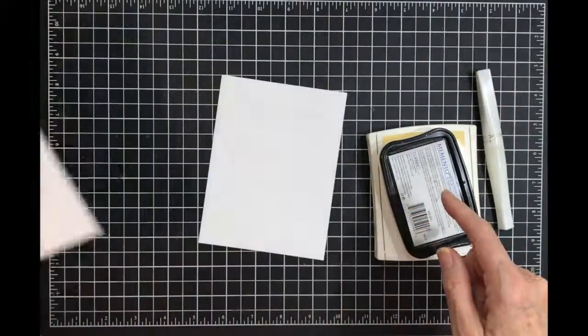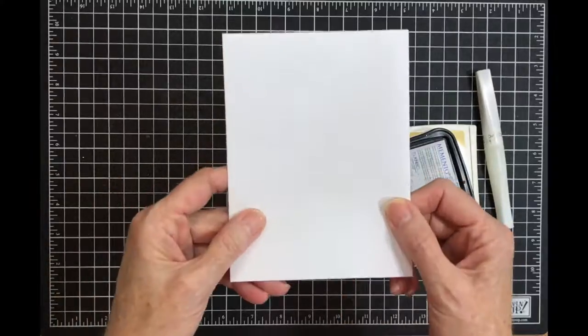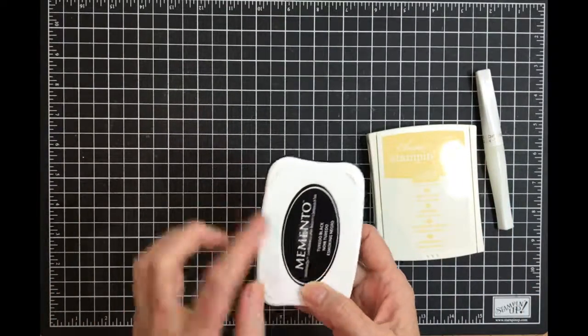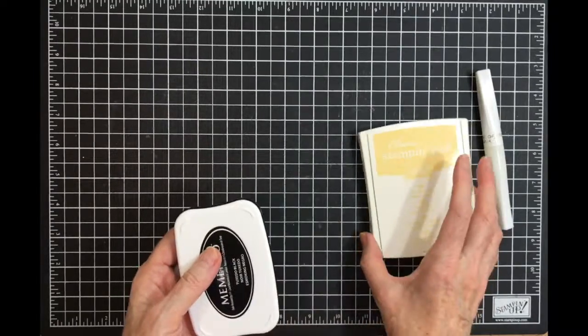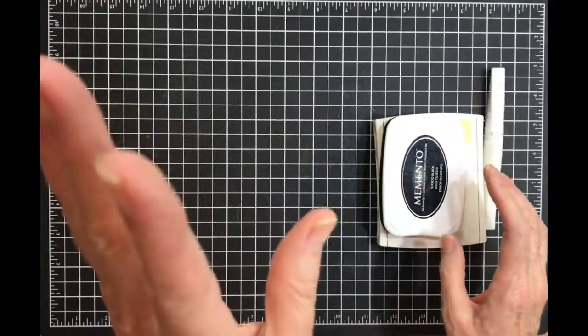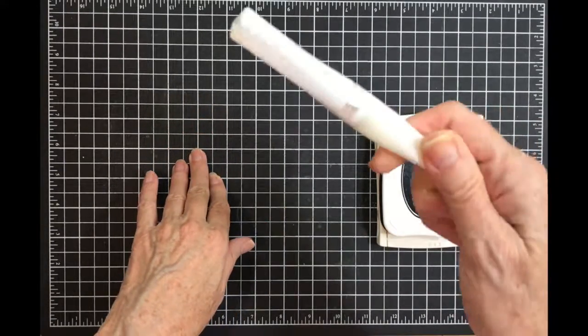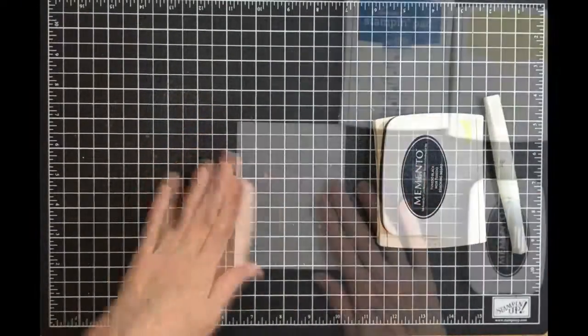My envelope. I'm going to be using the Memento Tuxedo Black ink, the So Saffron ink, and the Pacific Point ink that I forgot to pick up, and Wink of Stella.